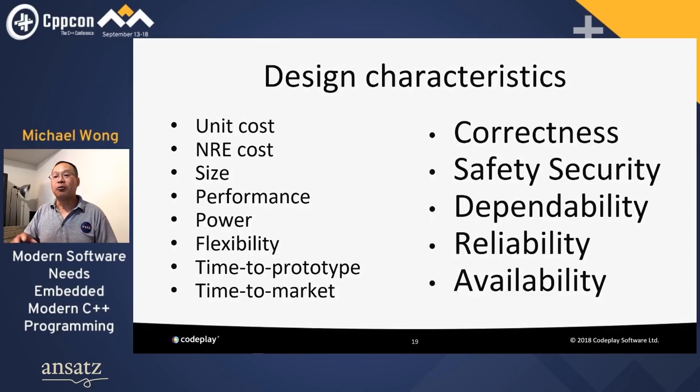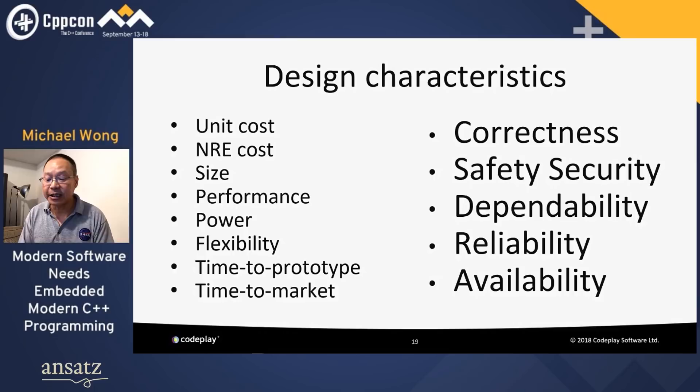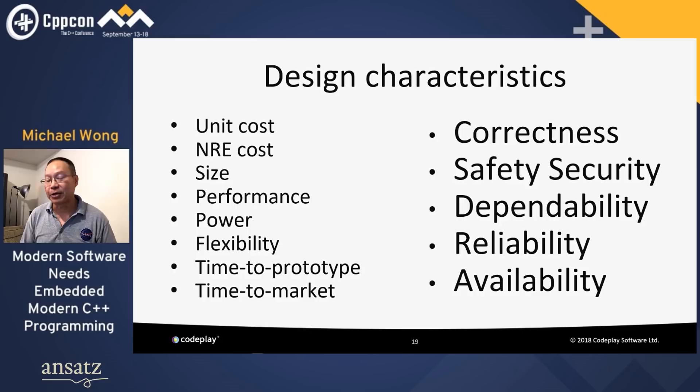They're also concerned with maintainability — the ability to modify the system after initial release — and correctness and safety. In terms of dependability, they care about reliability: the probability of a system working correctly provided it worked at time t=0. They care about maintainability: the probability of a system working correctly certain time units after an error occurred. And availability: the probability of a system working at time t. Safety-critical applications must operate correctly at all times — like airplane flight control computers.